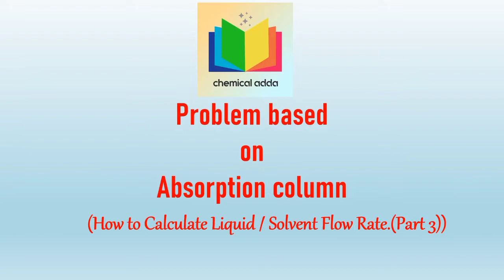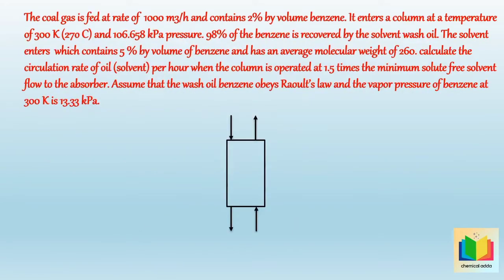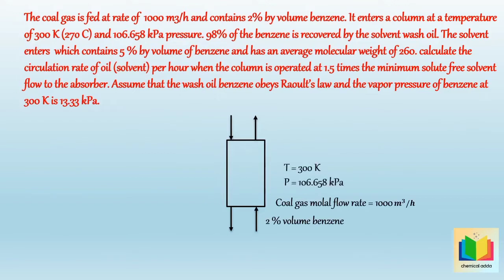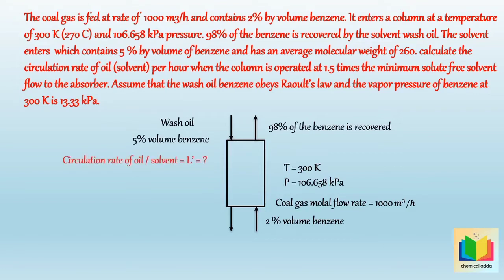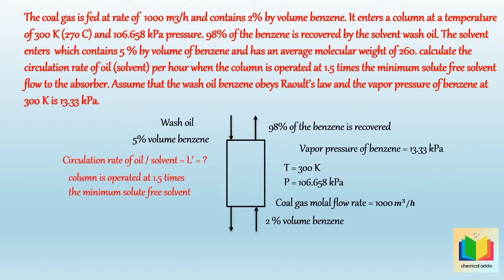The coal gas is fed at a rate of 1000 cubic meters per hour and contains 2% by volume benzene. It enters a column at a temperature of 300 K and 106.65 kilopascals pressure. 98% of the benzene is recovered by the solvent wash oil. The solvent enters containing 5% by volume benzene and has an average molecular weight of 260. Calculate the circulation rate of oil per hour when the column is operated at 1.5 times the minimum solute-free solvent flow. Assume that the wash oil-benzene system obeys Raoult's law and the vapor pressure of benzene at 300 K is 13.33 kilopascals.